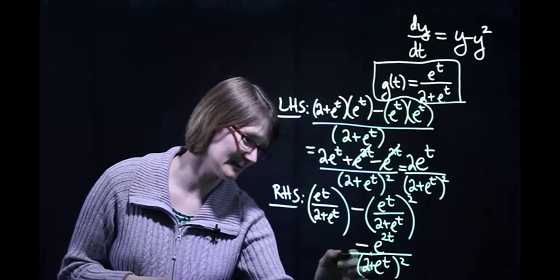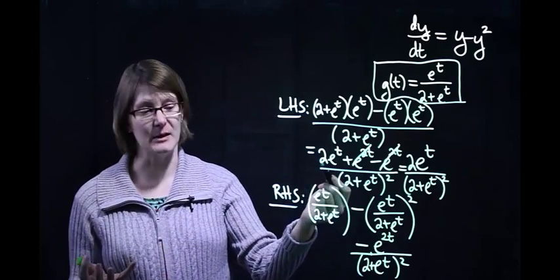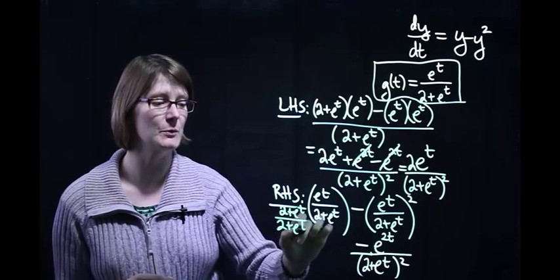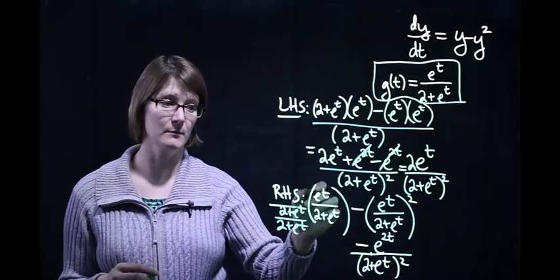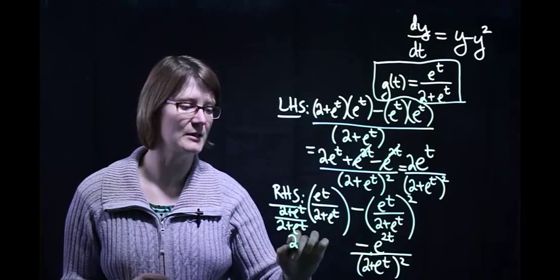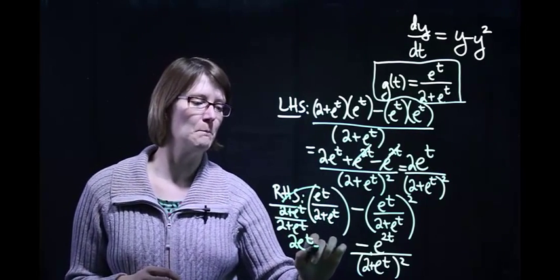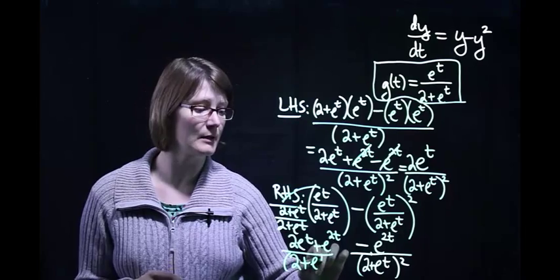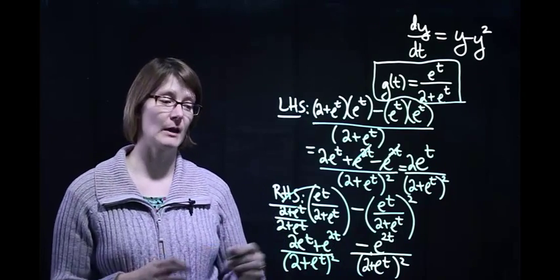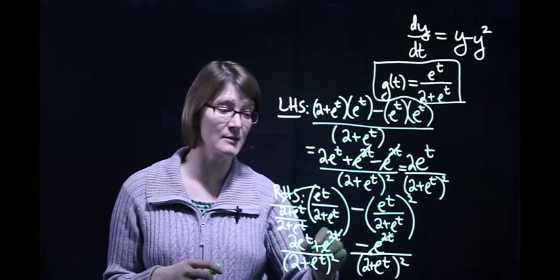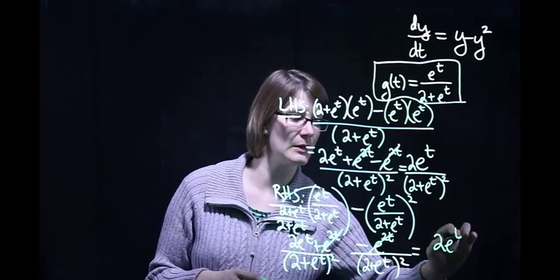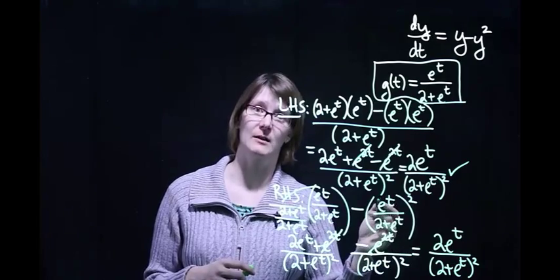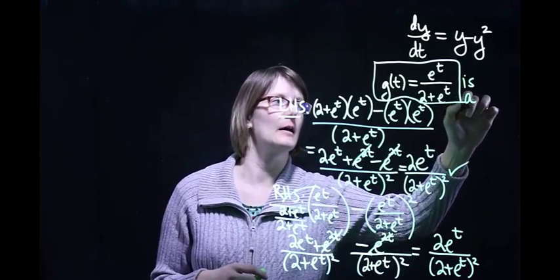Looking back at our first fraction, we need to find a common denominator. So I multiply that first fraction by (2 plus e to the t) over (2 plus e to the t) to get a common denominator. Distributing everything through, we get 2e to the t plus e to the 2t over (2 plus e to the t) squared. Combining these two fractions, the e to the 2t terms cancel, and we end up with 2e to the t all over (2 plus e to the t) squared — which is exactly the same as the left-hand side. So this is a solution.